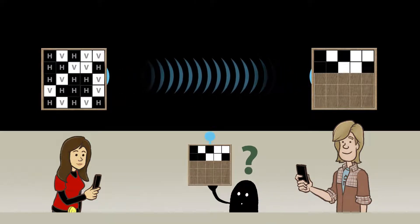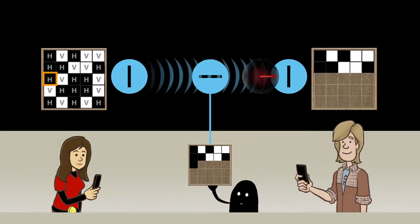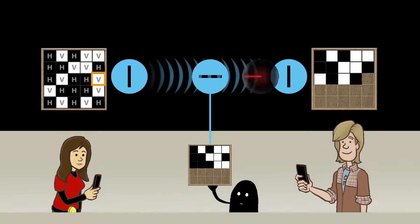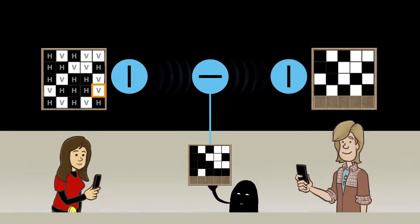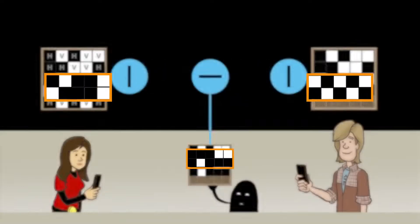Yet the spy does not actually know the measuring base. In the wrong base — that is, in this case, plus or minus 45 degrees — he would obtain an entirely different random pattern. And Bob as well, for the spy would then no longer transmit horizontally or vertically polarized photons to Bob, but photons polarized in plus or minus 45 degrees. In addition, Alice and Bob would notice that somebody had eavesdropped on them, because their random patterns would be completely different from one another.